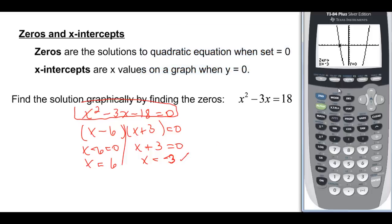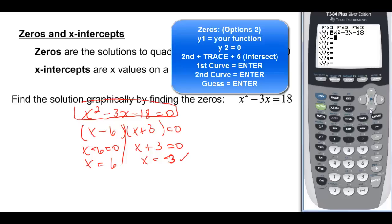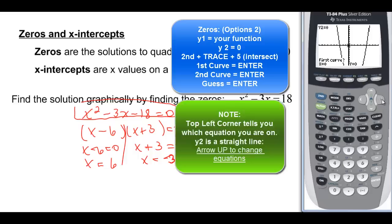If we want to find the other one, again we can do second trace 2 for a zero, but I want to show you another way that you could find the zeros. It takes two equations, but you would put in zero here, y2 equals zero, because that's the x-axis. And then all you have to do is second trace 5, and you would do the intersection. I want to get to that point over there, so I'm going to just go on my second equation, because it's a straight line, and I just have to make sure I'm on the other side of the vertex.